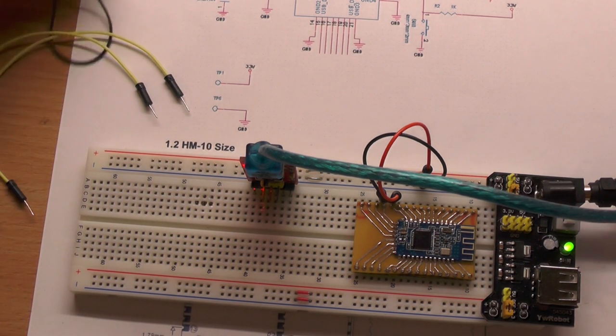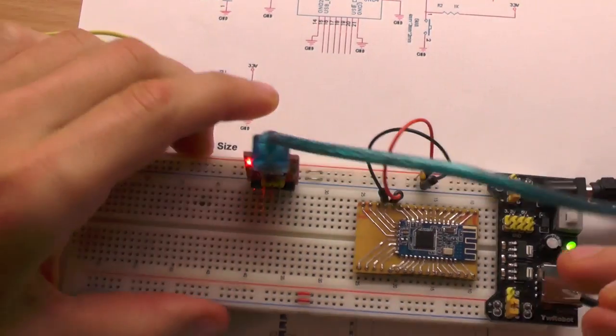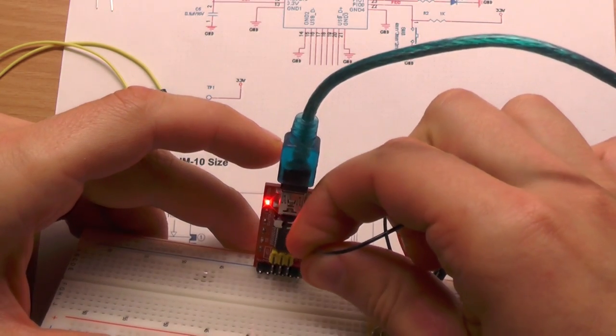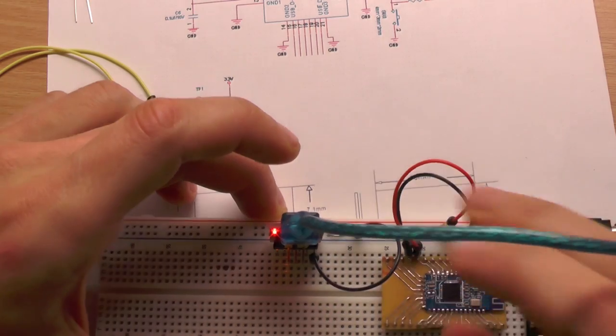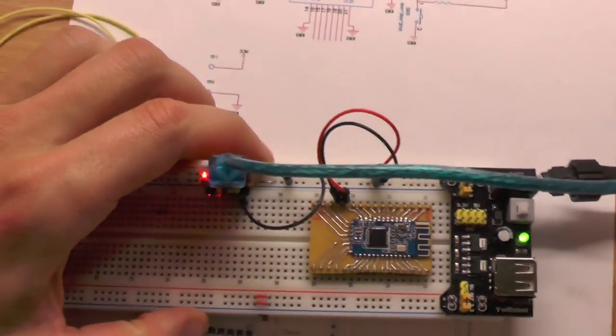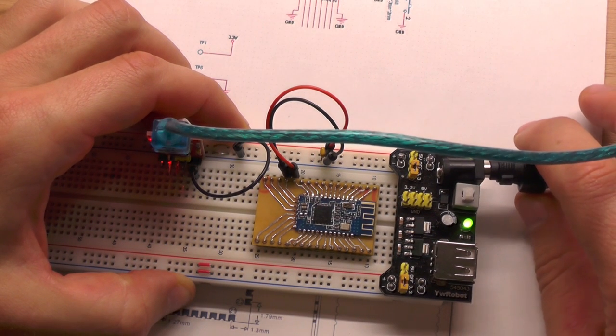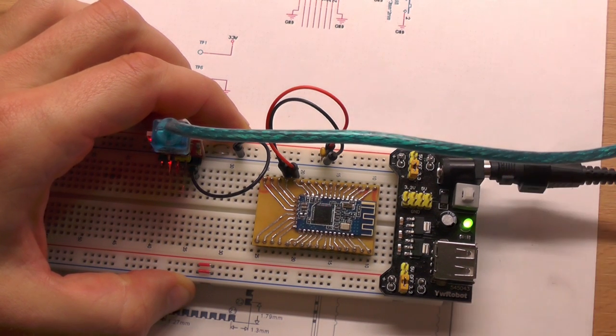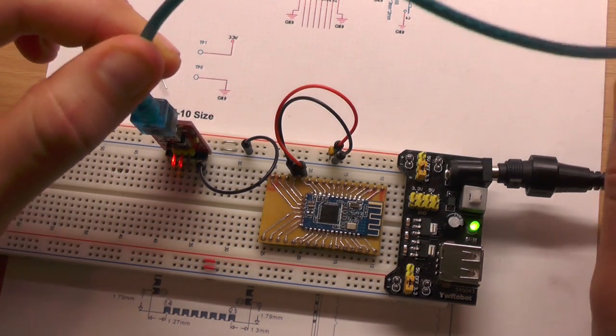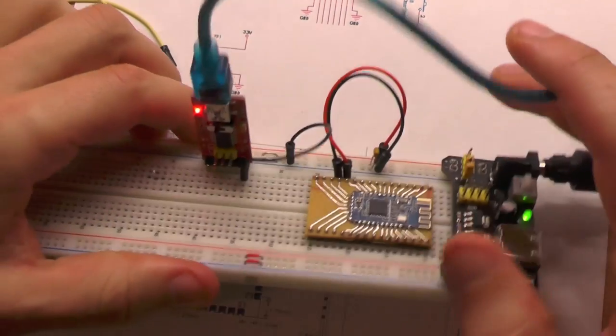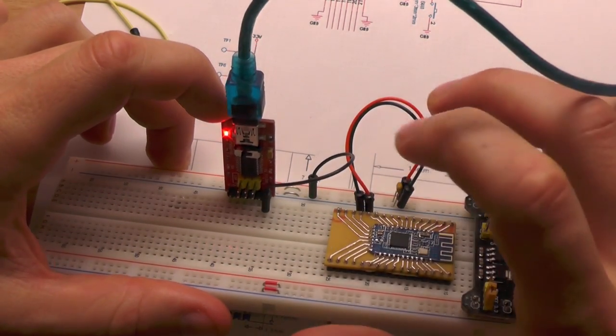Then we have to connect the ground of the FTDI which is here to the ground of our breadboard, because we use this wall adapter that is a different power source than this USB cable here, so they can't communicate if they don't have the same ground level.